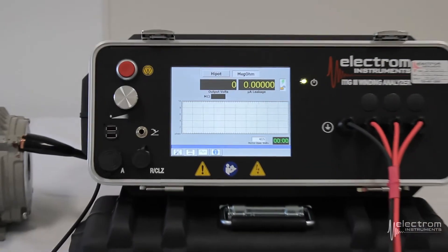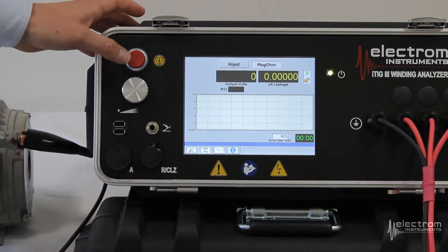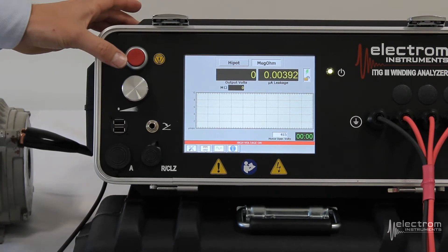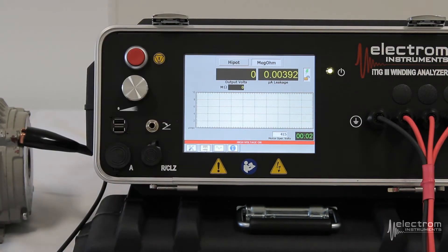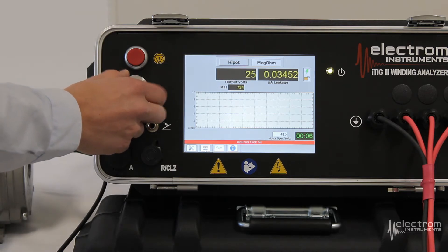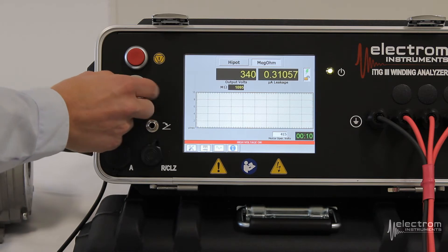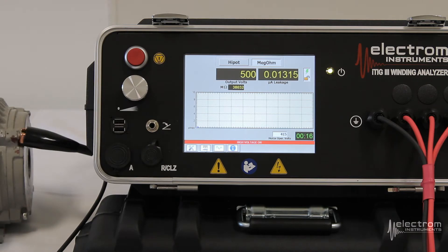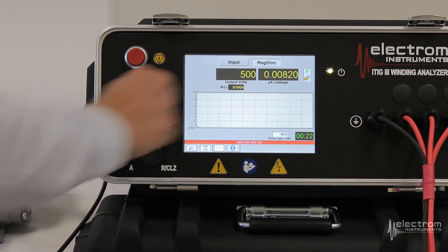We're going to start with our megohm measurements. To do so we will press the red button. It will say high voltage on. And now you turn the silver dial clockwise to your desired test voltage. In this case for low voltage motors, let's take it up to about 500 volts. You can see the leakage current is decreasing as the polarization dissipates. It will calculate your megohms.